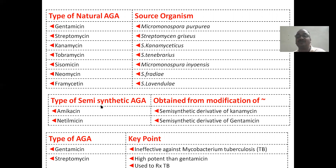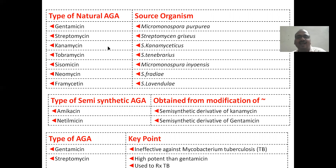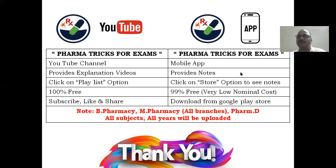This has appeared a number of times in examinations. Semi-synthetic aminoglycosides: amikacin is the semi-synthetic derivative of kanamycin. Netilmicin is a semi-synthetic derivative of gentamicin — first you extract gentamicin, then do some modification of the structure to get netilmicin. These are the natural aminoglycosidal antibiotics. Key important point: gentamicin is ineffective against mycobacterium; streptomycin is used to treat TB and is more potent. This is more than enough for your regular examination of B-Pharmacy and M-Pharmacy.